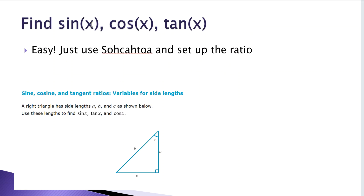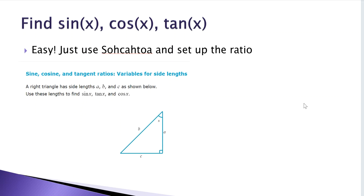Here is the first kind: you find the sine, cosine, or tangent. These rely on SOHCAHTOA and have you just set up the ratio. You identify these because the question will tell you to find the trig function — sine, cosine, or tangent will be in there as well. On these kinds of problems I'm going to rely on SOHCAHTOA. I'm also going to label — I need to label what is what. The angle I'm working with is up here.